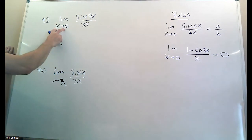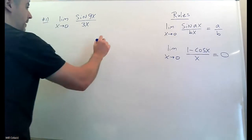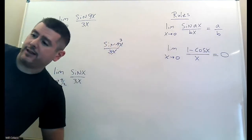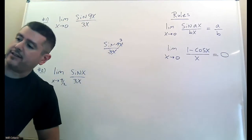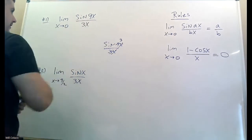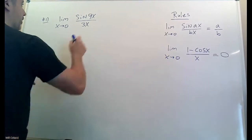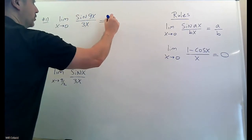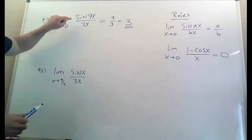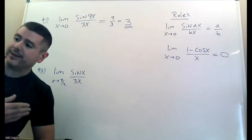This is of critical importance. I've seen some really bad work where students cross out the x's and say nine divided by three is three. That is completely wrong. This is the sine of the angle nine x — this is not sine times nine x. The three does not divide into the nine in any way unless you use the rule. Sine of nine x does not equal nine times sine x — that's false. Use the rule I gave you.